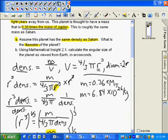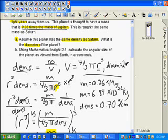And so we also need to know the density, and we're going to use the density that Saturn has. And so we can also look that up. The density of Saturn turns out to be 0.70 grams per cubic centimeters.